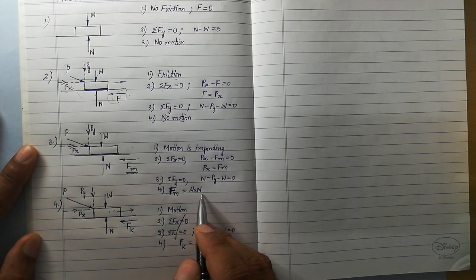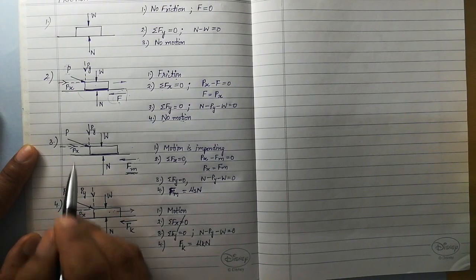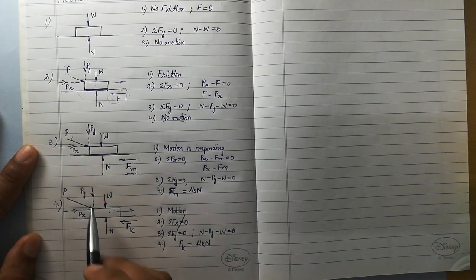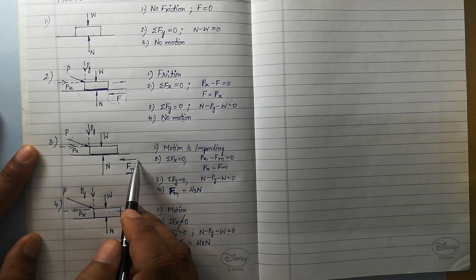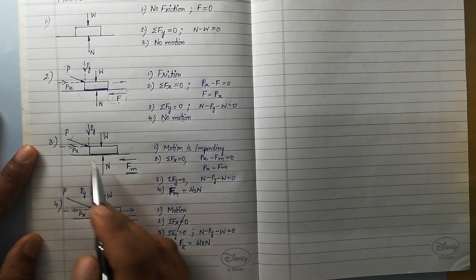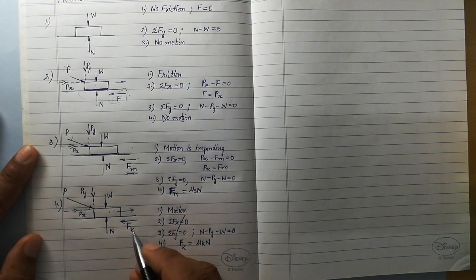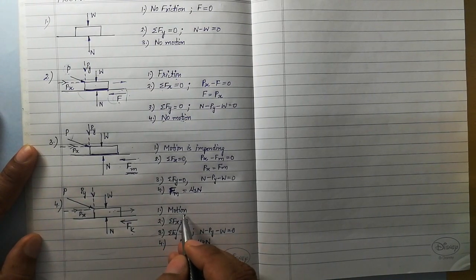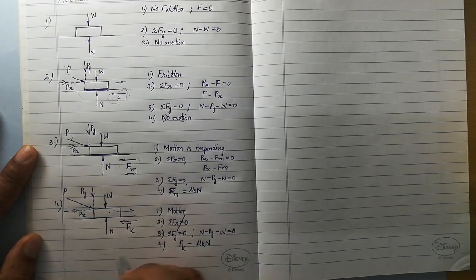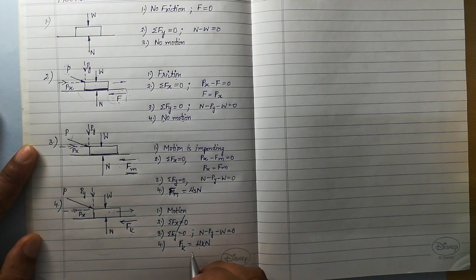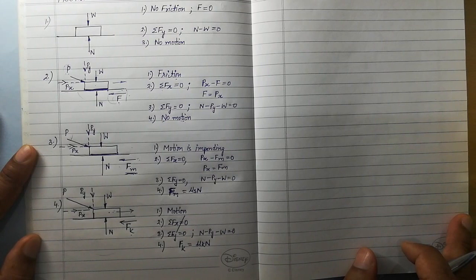Now the last case: if we increase P or the external force even further, Fm will no longer be able to counter Px and motion will start. When motion starts, the static friction Fm will be converted into kinetic friction. In this situation there is motion along the x direction, so summation Fx equal to 0 is not applicable. But the body is not moving along the y direction, so summation Fy equal to 0 is still applicable. Kinetic friction equals mu_K times N, where mu_K is the coefficient of kinetic friction and N is the normal pressure.